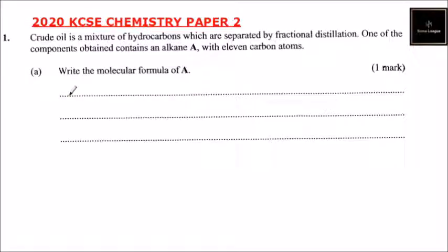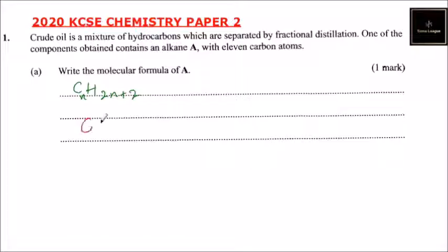Part A: write the molecular formula of A. The general formula of an alkane is CnH2n+2. So if the alkane has 11 carbons, the formula is C11H24 — because 11 times 2 is 22, plus 2 gives 24. So that is the molecular formula.